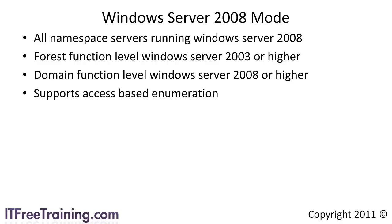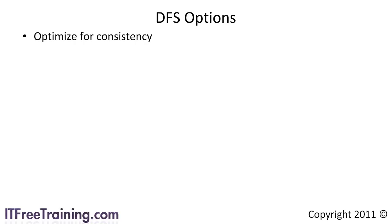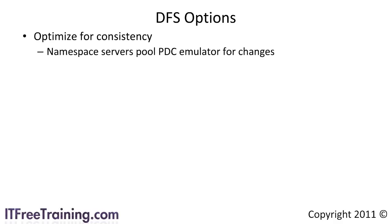Windows Server 2008 mode also offers improvements in scalability. With Windows Server 2008, your DFS namespace can support more than 5000 targets. Most networks will not have DFS namespaces with more than 5000 targets. However, if your namespace does start getting larger, there is a scalability option you can configure. The first setting is optimize for consistency. This is the default mode for DFS namespaces. When this mode is enabled, DFS servers will poll the PDC emulator at regular intervals for namespace changes.